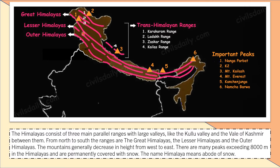The mountains generally decrease in height from west to east. There are several peaks which exceed 8,000 meters in the Himalayas, and they are permanently covered with snow. The name Himalayas comes from the Sanskrit words meaning 'abode of snow' — Heem means snow, and Aalay means abode — so Himalaya means the abode of snow.